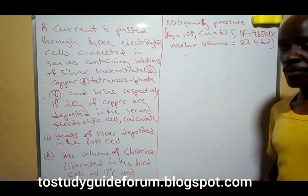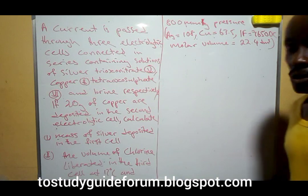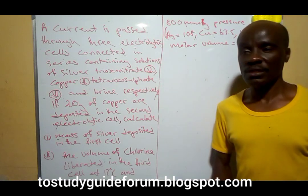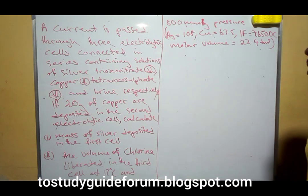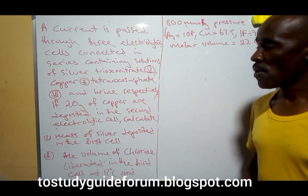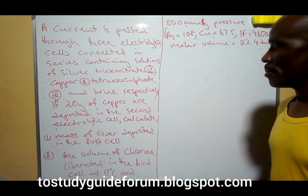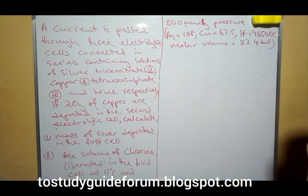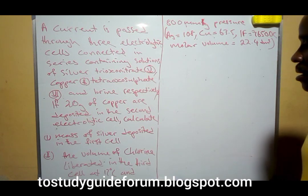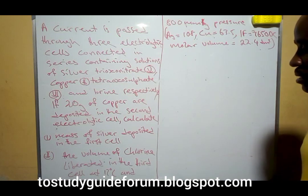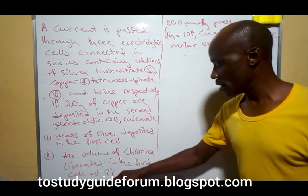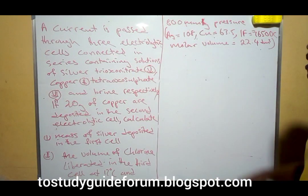Welcome to another moment in Saudi Guy Forum. Here we're going to be looking at a question under Faraday, as we promised. The question says that a current is passed through three electrolytic cells connected in series containing solutions of silver nitrate, copper(II) tetraoxysulfate, and brine respectively. If 20 grams of copper are deposited in the second electrolytic cell, calculate the mass of silver deposited in the first cell and the volume of chlorine liberated in the third cell at 17 degrees Celsius and 800 millimeter mercury.